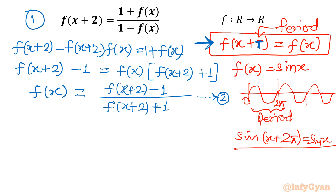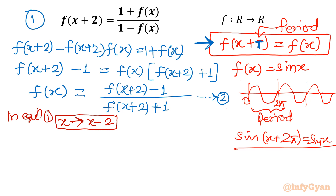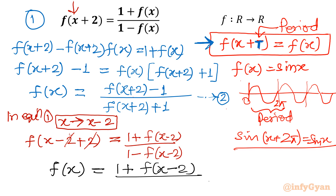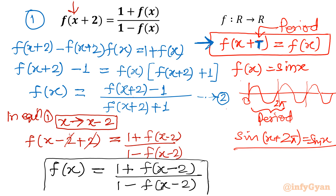Now I will give one substitution: in equation 1, I will replace x with x − 2. So x − 2 + 2 simplifies, and after substitution the result is: f(x) = [1 + f(x−2)] / [1 − f(x−2)]. Let me call this equation number 3.